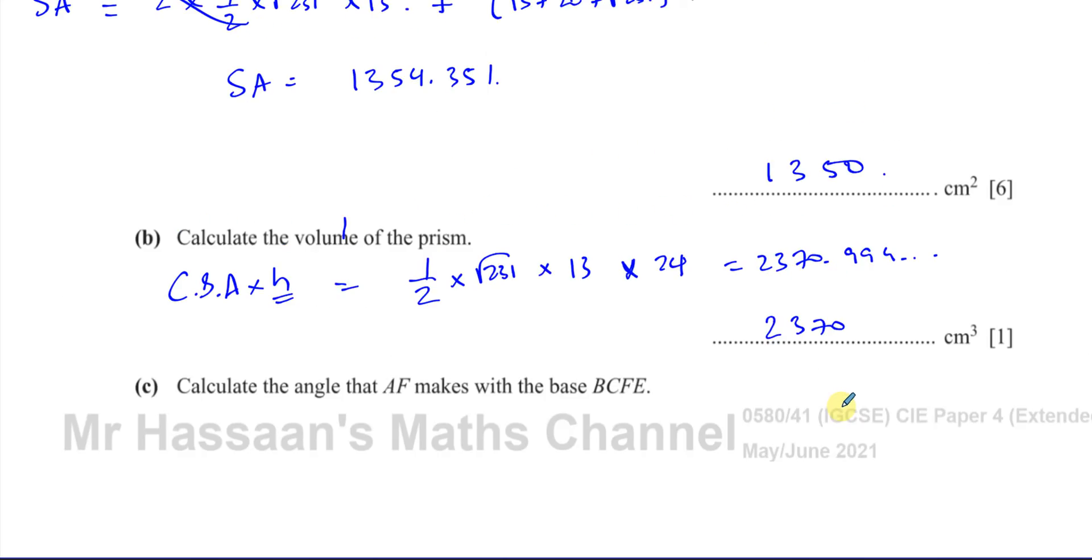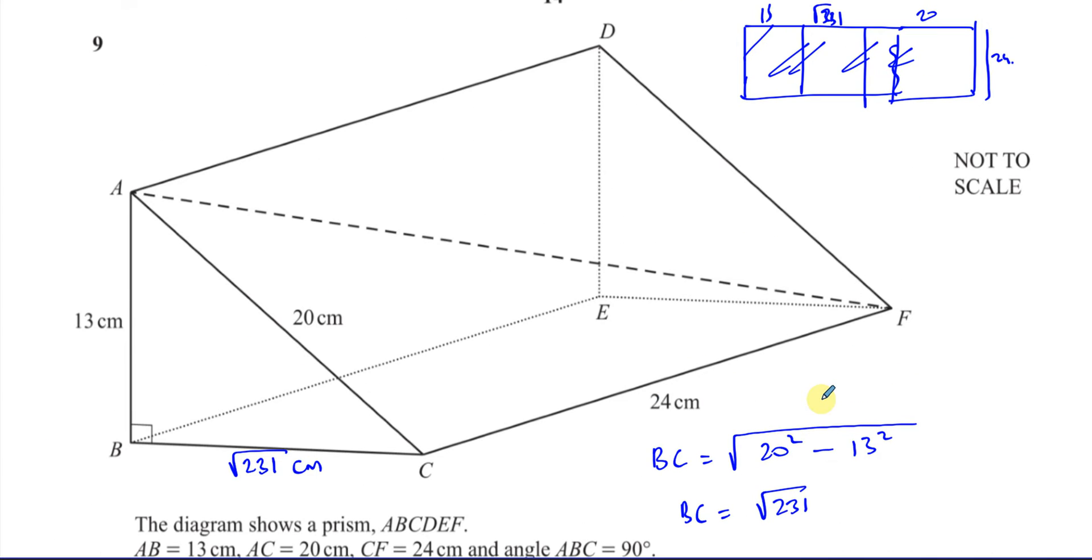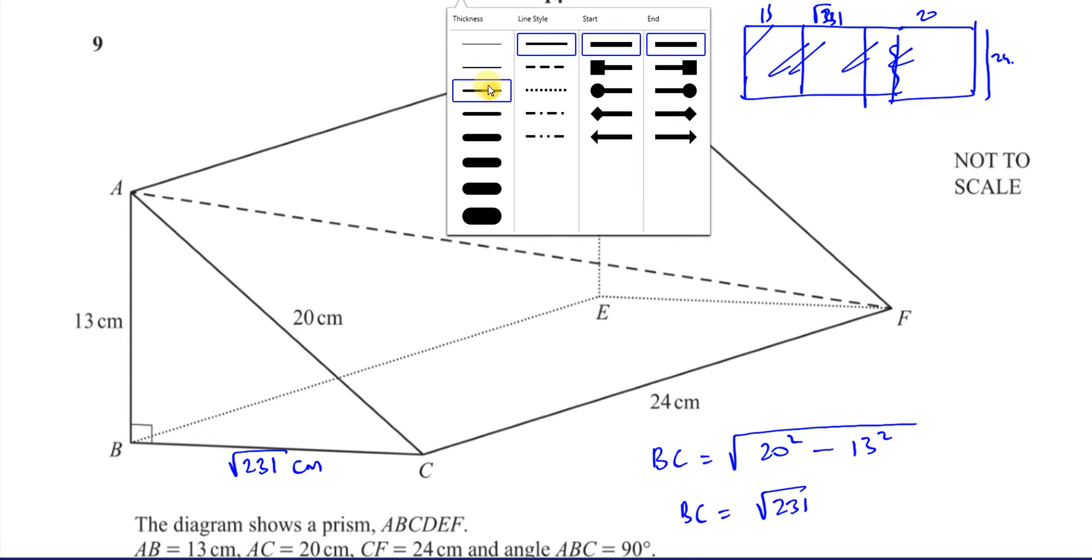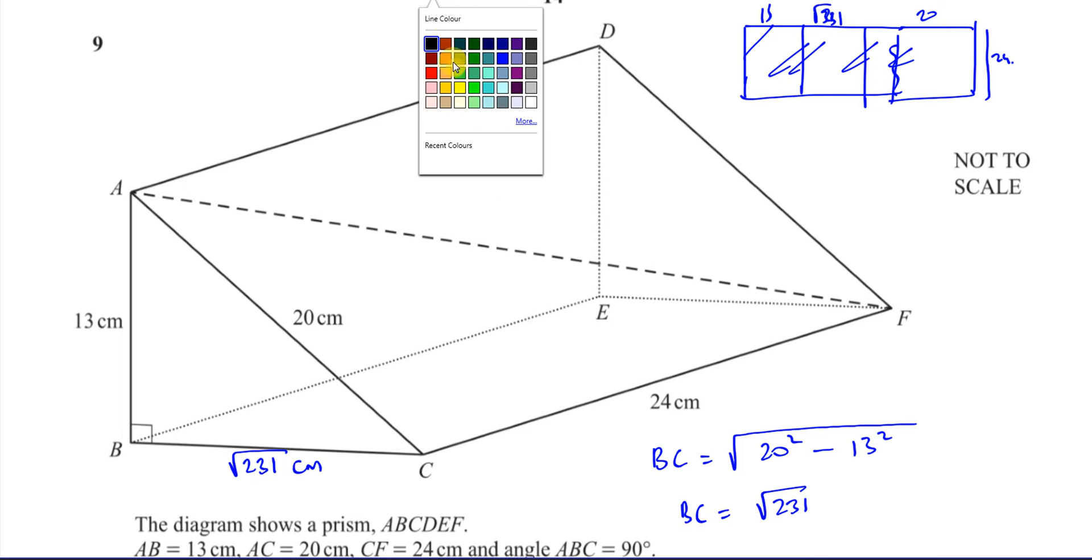And part E says, calculate the angle AF makes with the base BCFE. So we need to find the angle between AF, this line, and the base. So it's like the angle between this line and the shadow it would form along the base. Let's change this color a little bit. So there would be a shadow, if you've shone a light from above, onto the line AF with the base underneath it. There would be a shadow formed going from B to F like this. That's the shadow of this line on the base BF. So the angle between this line and its shadow, that's the angle we're looking for.